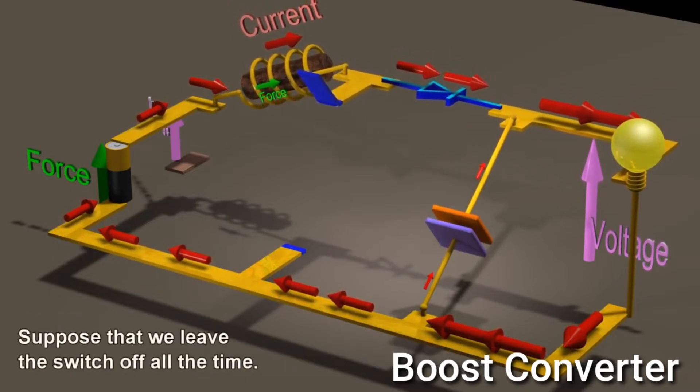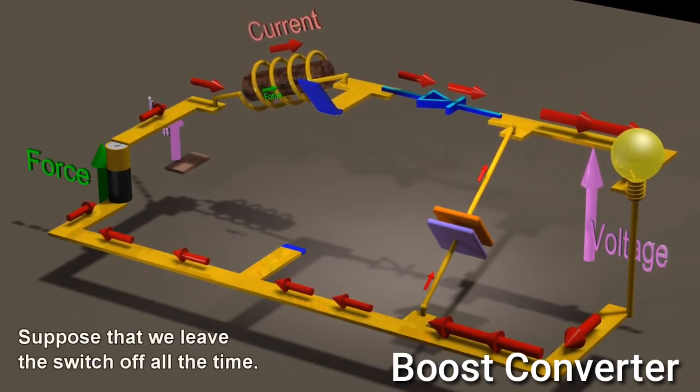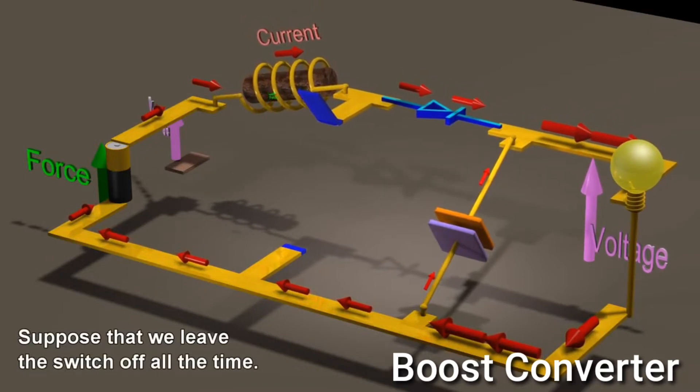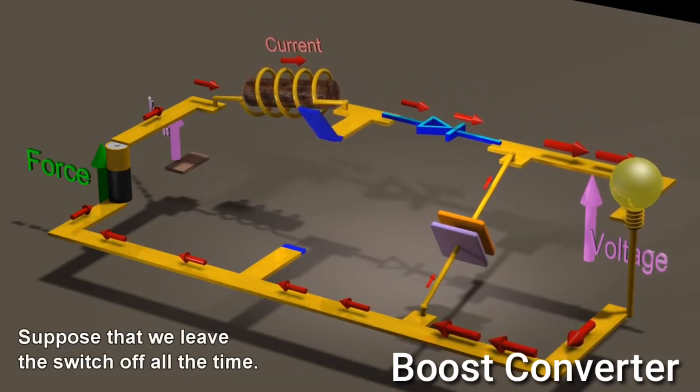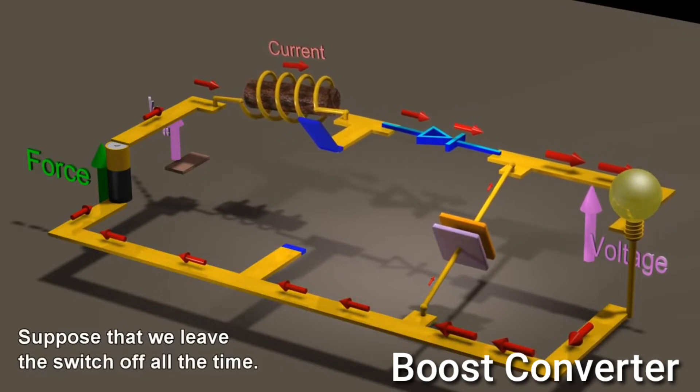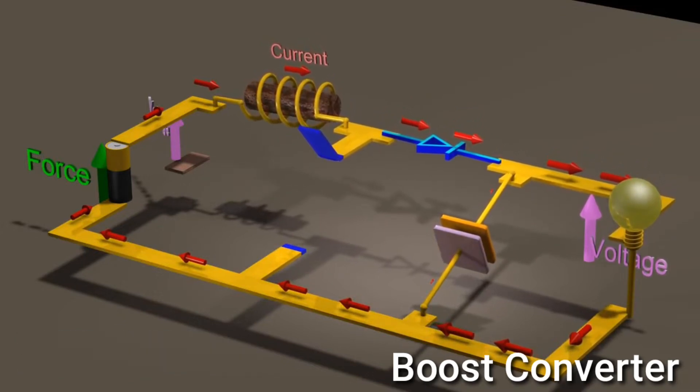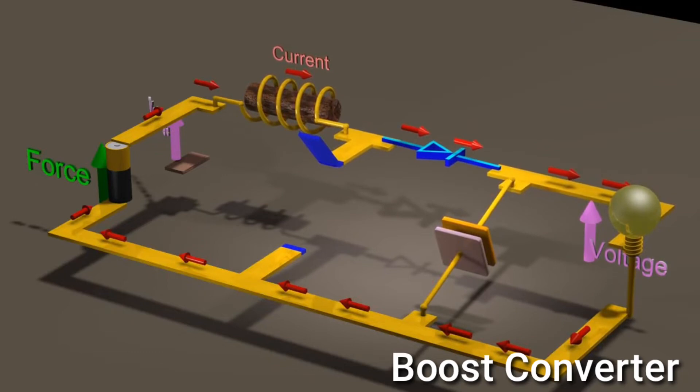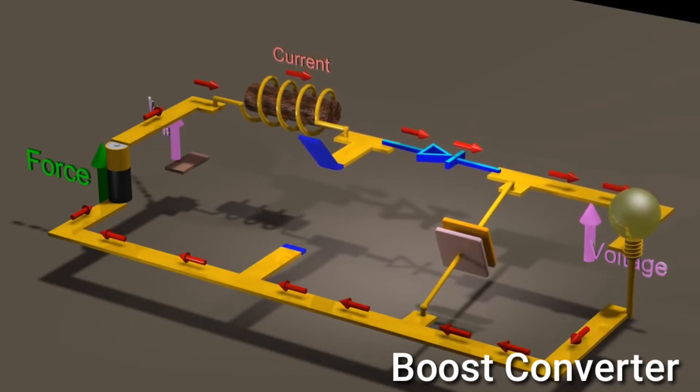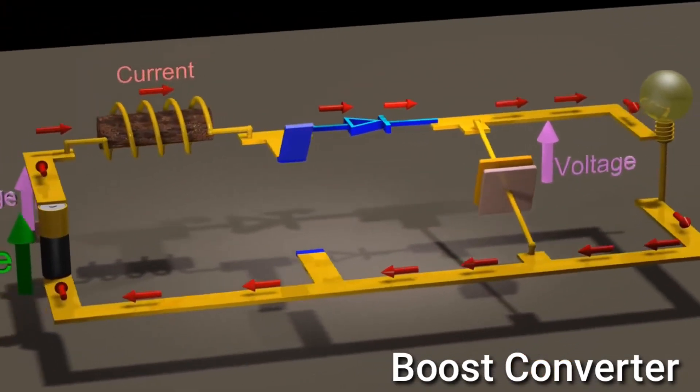Suppose that we leave the switch off all the time. With the switch off 100% of the time, the output voltage will equal the voltage of the battery.